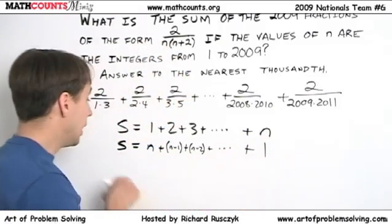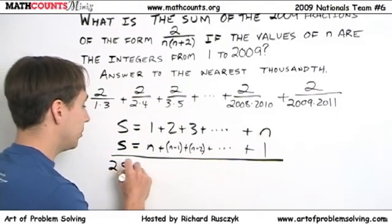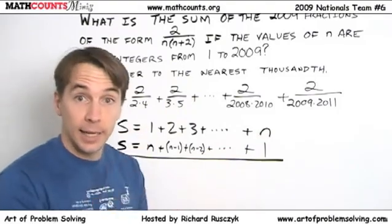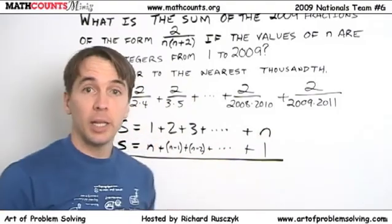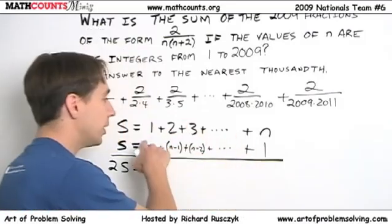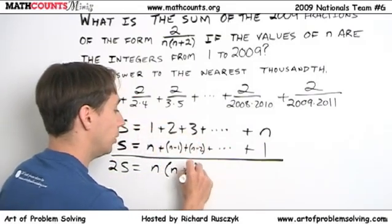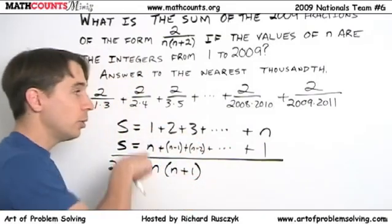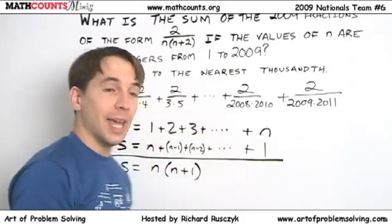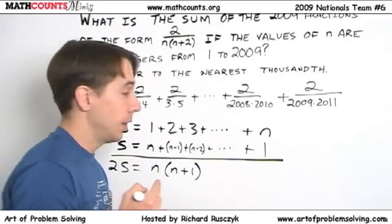We start from n, we go down to 1. And then we add these two up. We have 2 times the sum, the 1 and the n. You add that, you get n plus 1. You add the 2 and the n minus 1, you get n plus 1. You add 3 and the n minus 2, you get n plus 1. So over here, we have n pairs that all add up to n plus 1. So then we divide by 2 and we find out that the sum of the numbers from 1 to n are just n times n plus 1 over 2. That's nice.